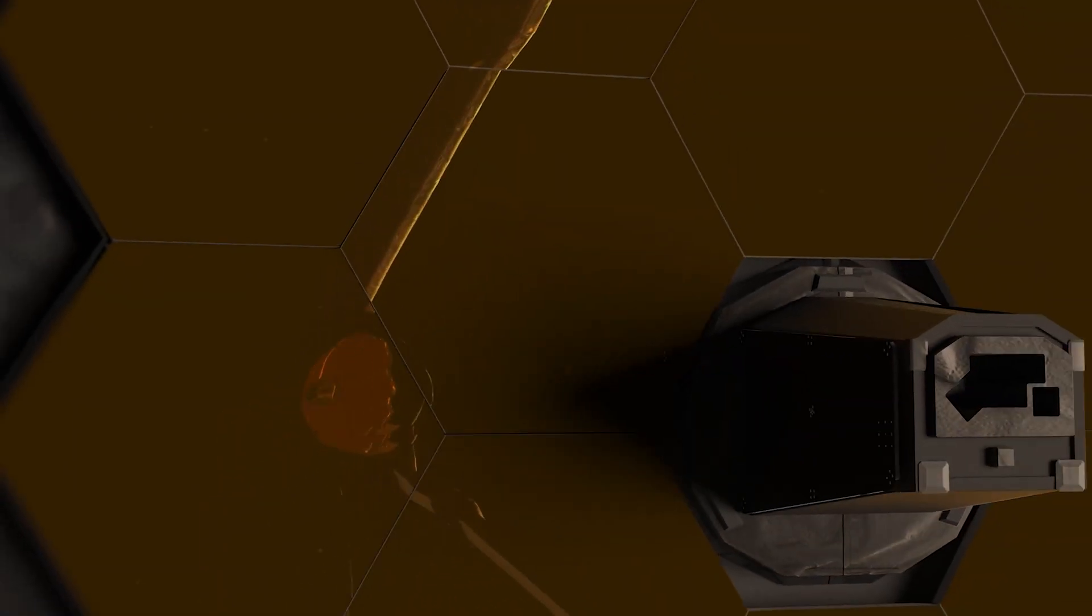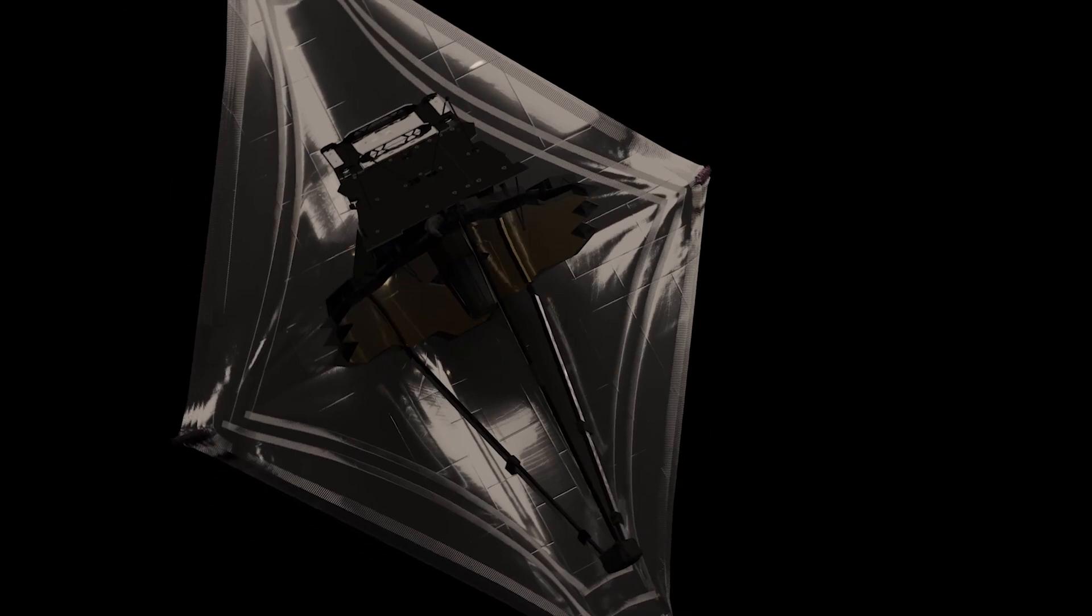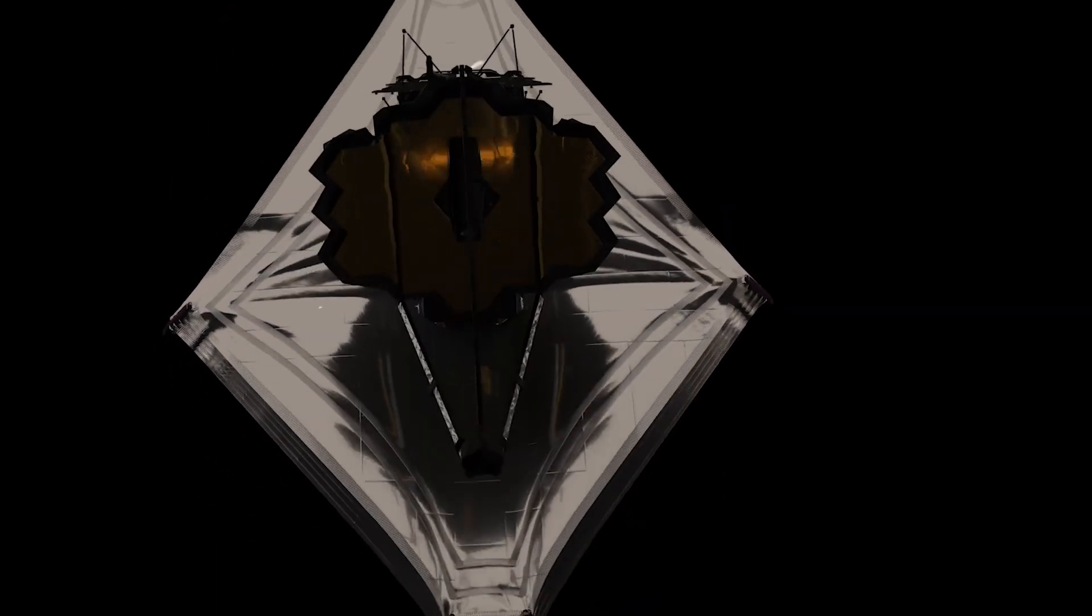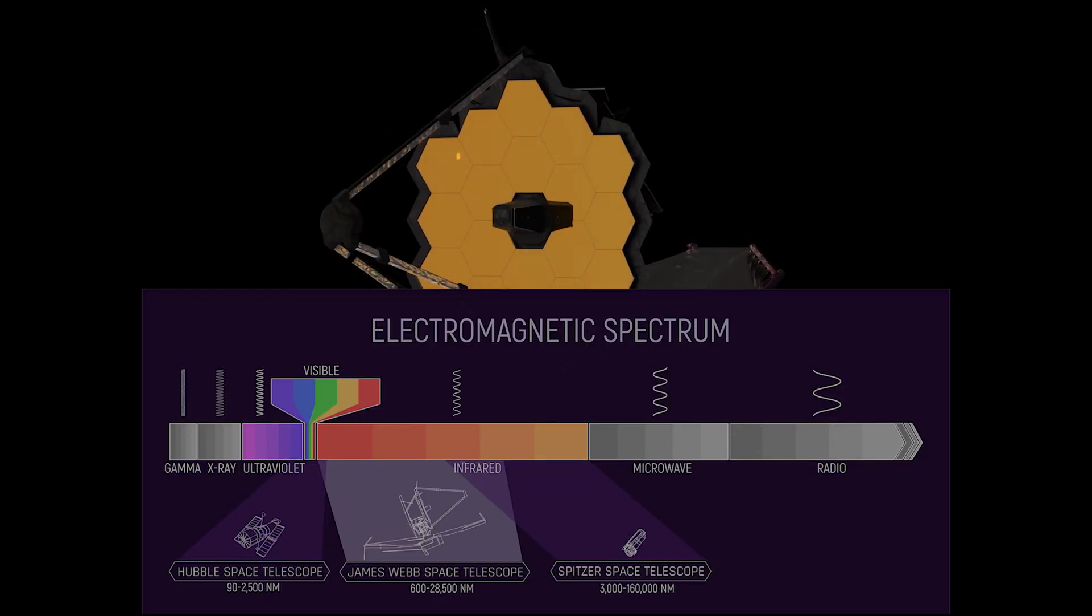The telescope does more than just observe, it actively searches. Using its powerful spectrometers, it studies the atmospheres of exoplanets, analyzing light wavelengths for hints of life.